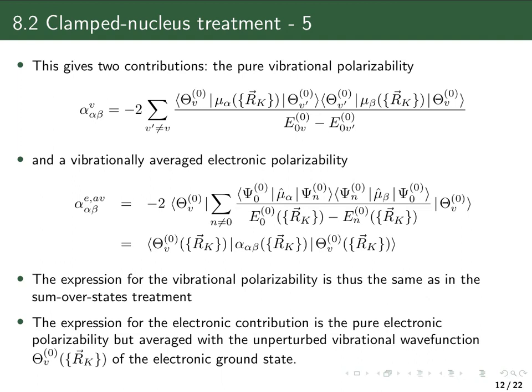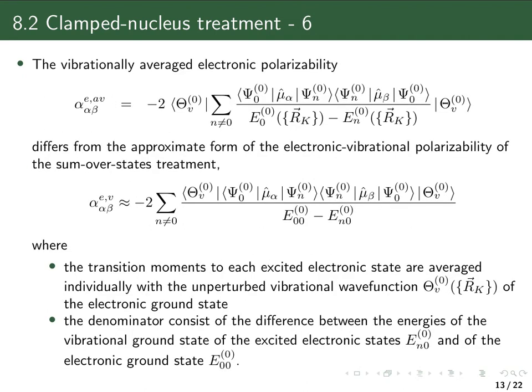Compared with the sum-of-states treatment from the last chapter, we get the same pure vibrational polarizability but a different electronic contribution. Let us compare these two expressions more explicitly: here we have the result from the clamped nucleus treatment, and there is what we obtained from the sum-of-states treatment after making the approximation of ignoring different vibrational states in the excited electronic states.